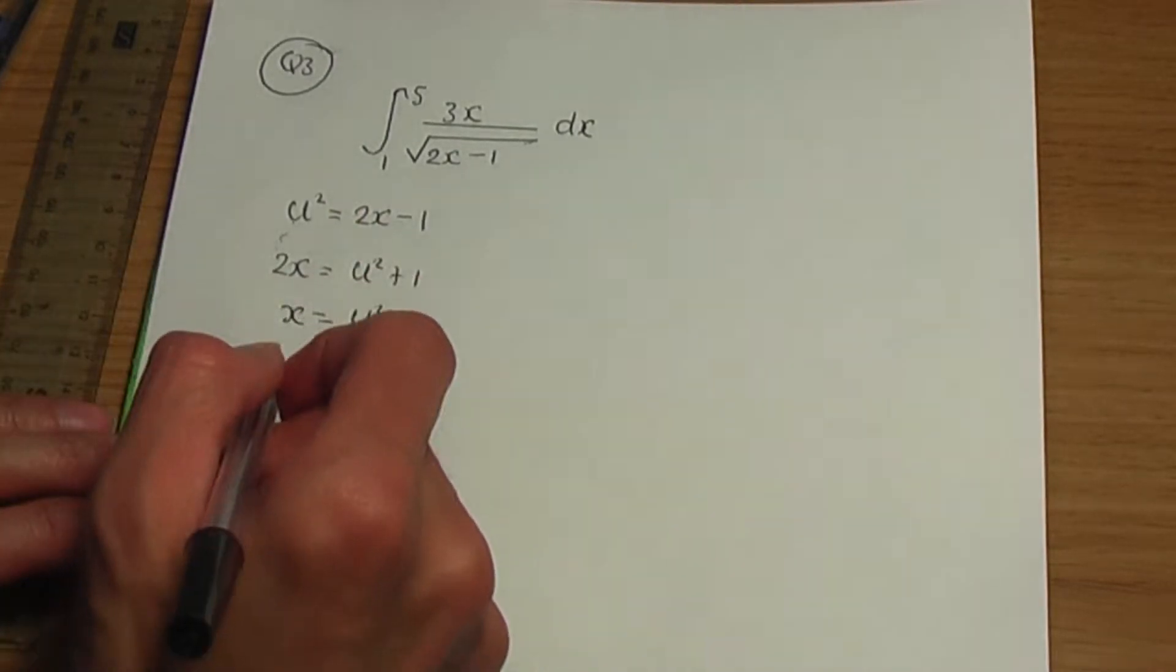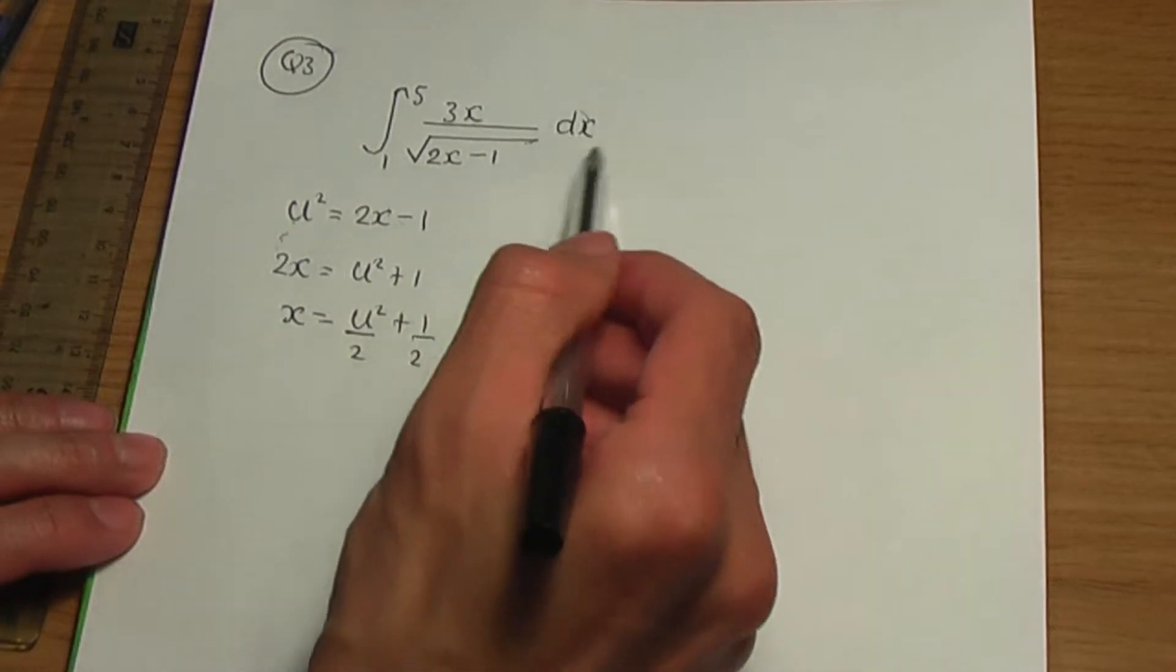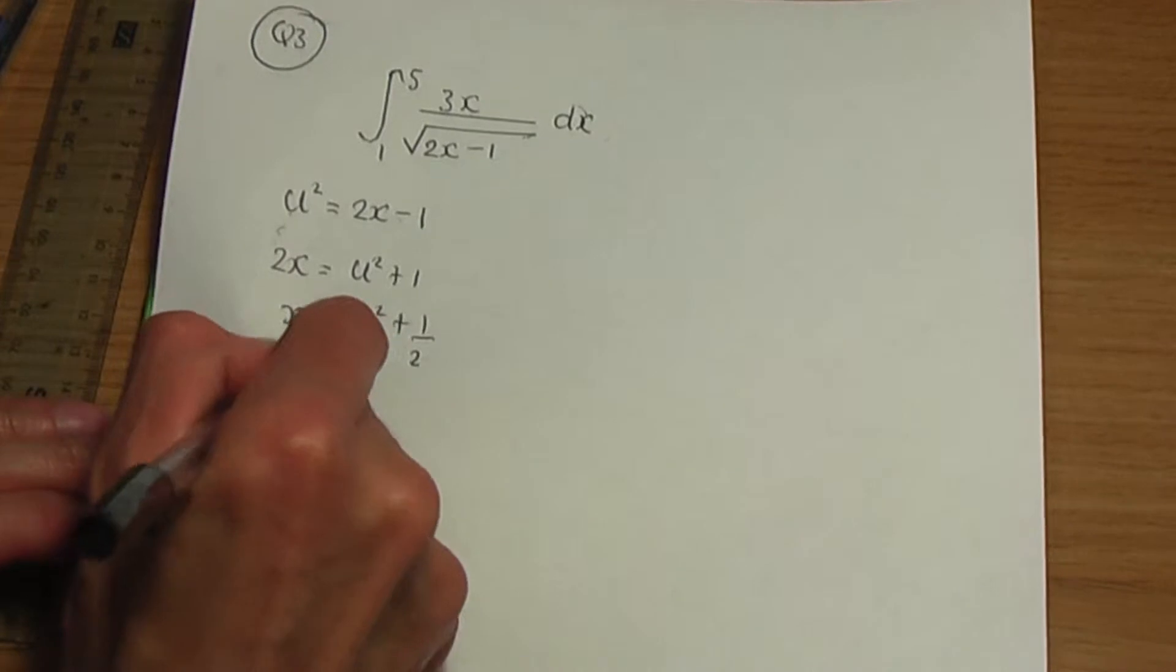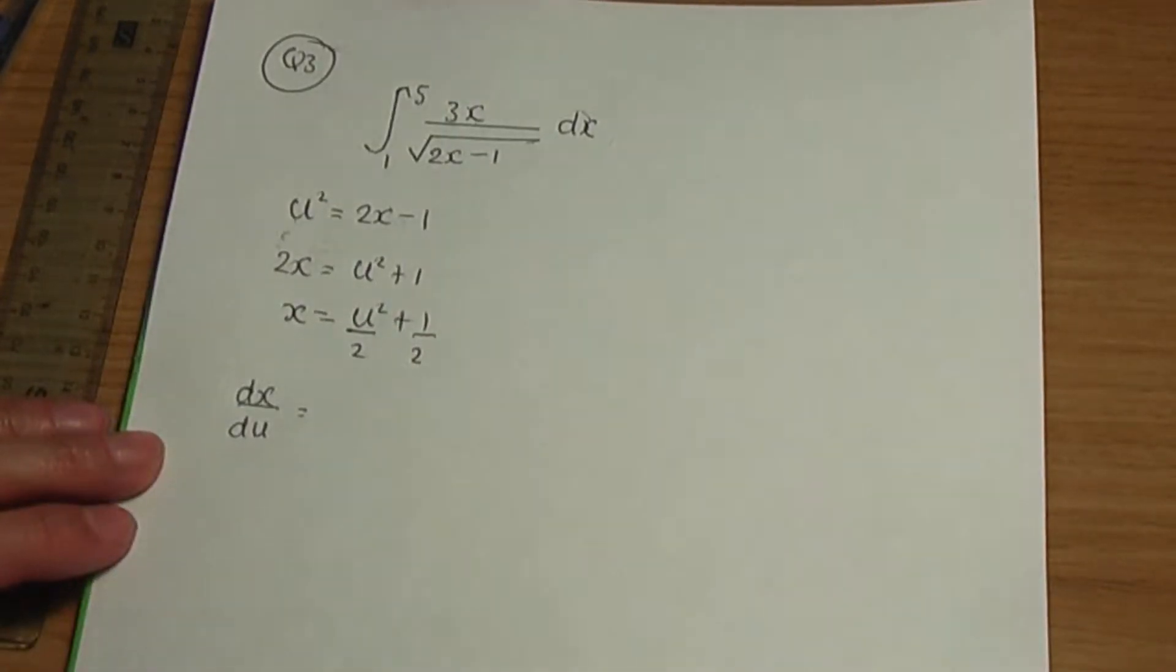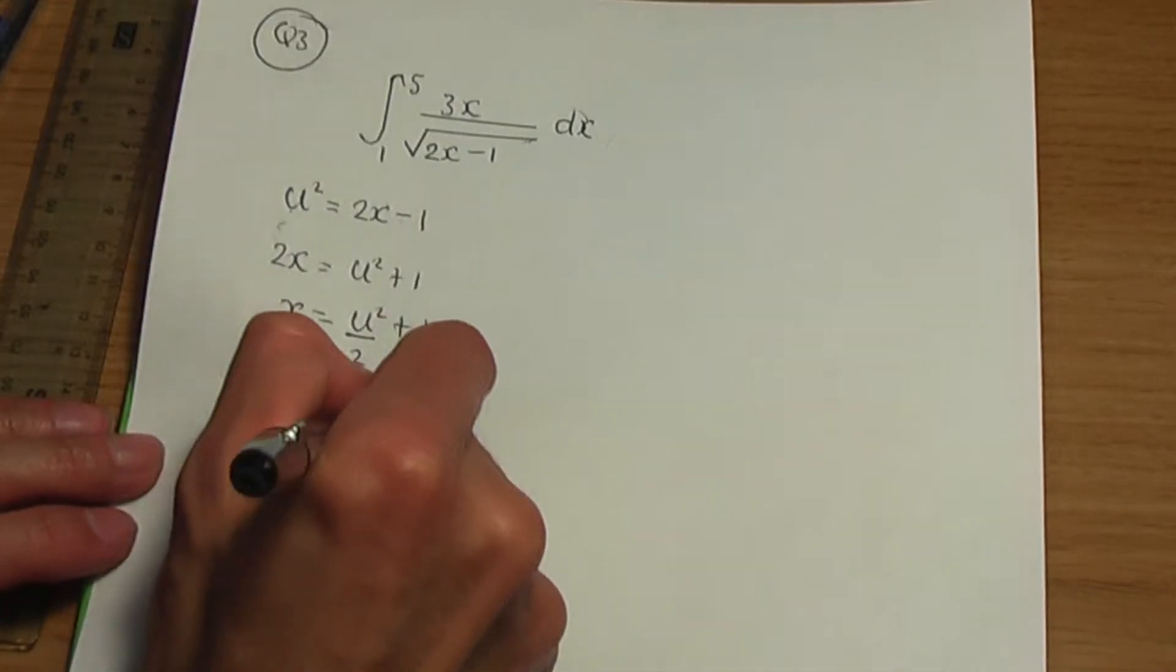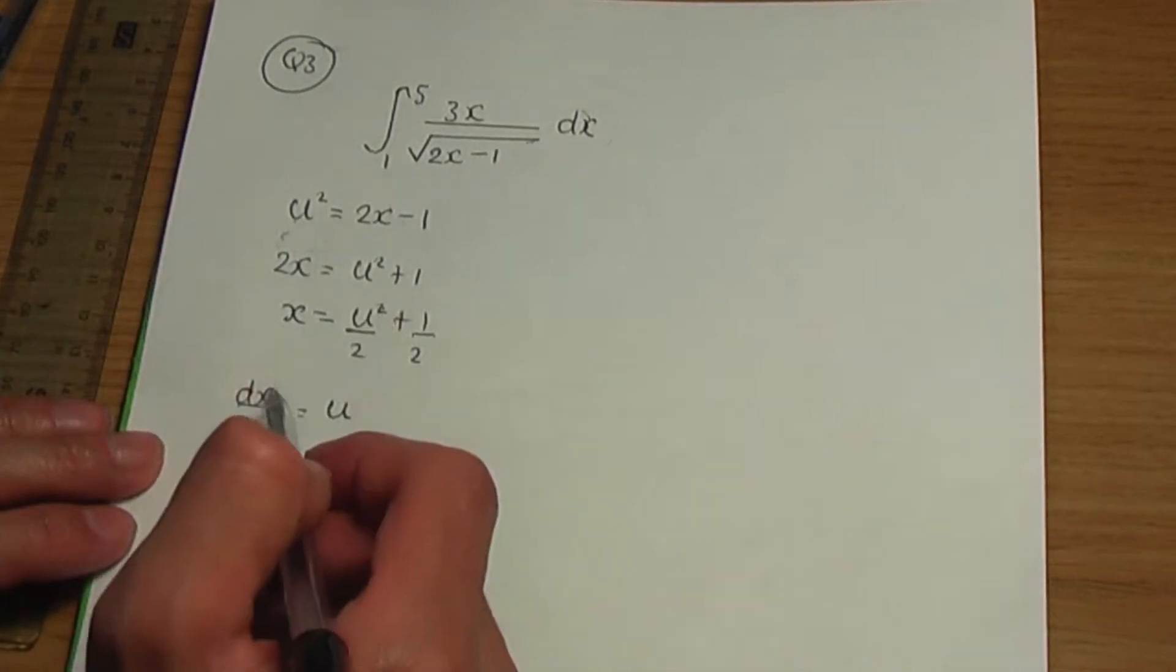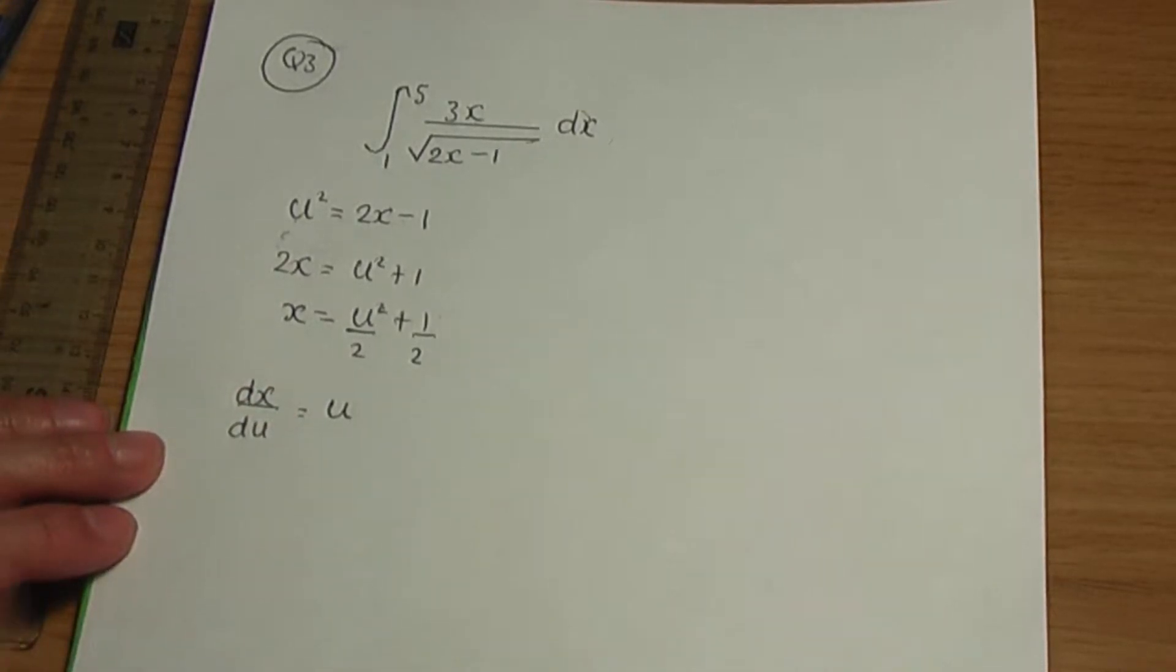I'm going to calculate dx over du so that I can use this to replace the dx term within the integral. If I differentiate x with respect to u, when I differentiate u squared over 2 with respect to u, I'm going to have u. Multiply by the power, subtract 1 from the power. And if I differentiate half, that being 0. So, dx over du is u.